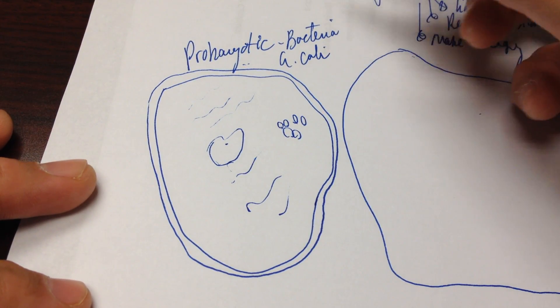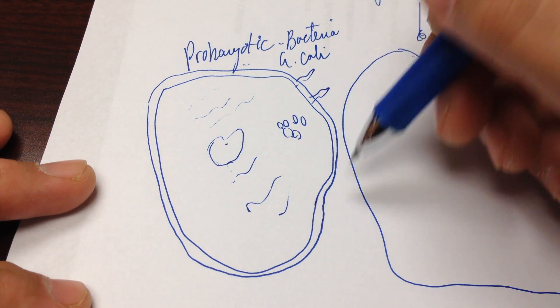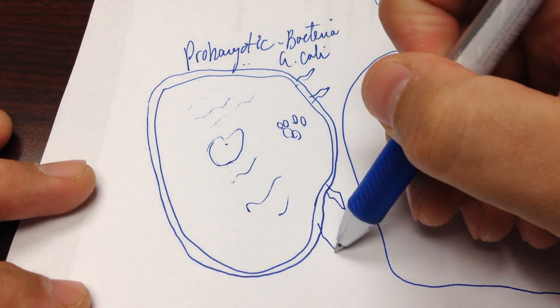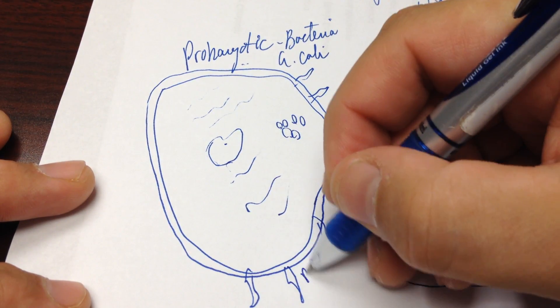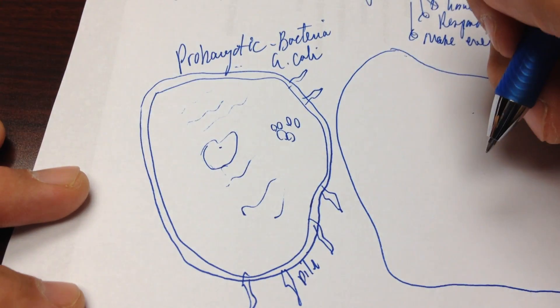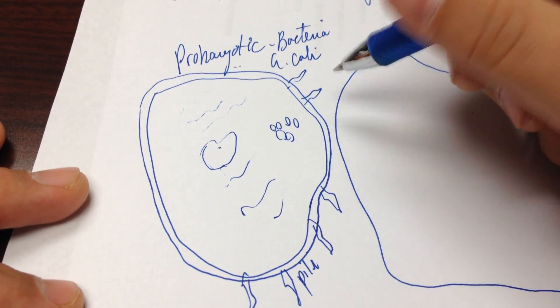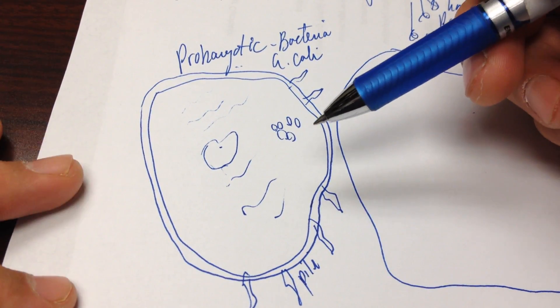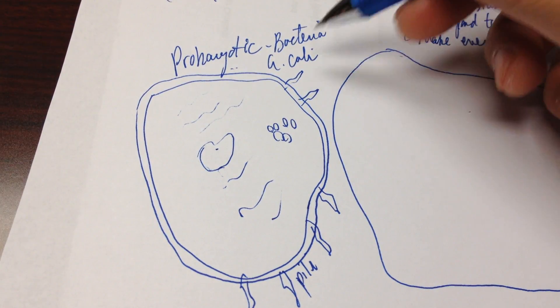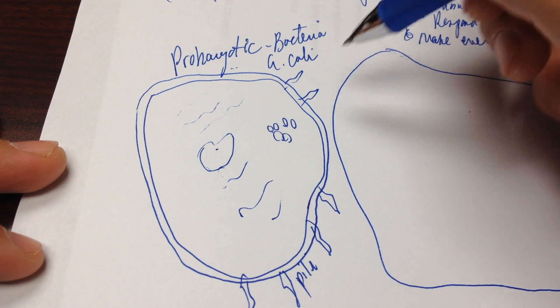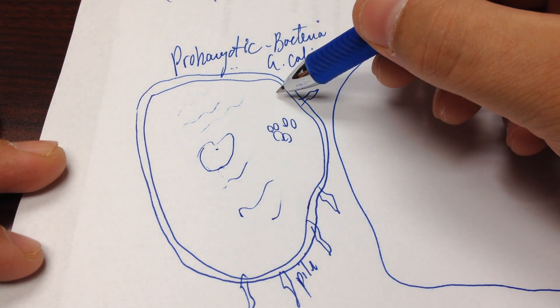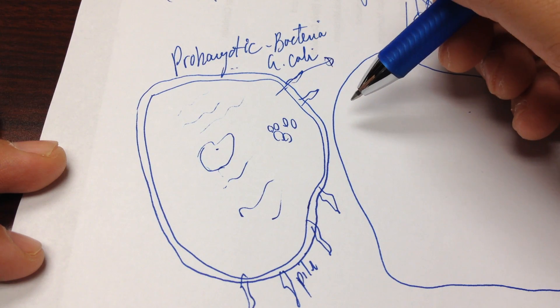Now, there's a lot of other optional structures. Some bacteria have these things called pili. These little projections that stick out from the outside. These are pili. And pili serve a number of purposes. They also, like the capsule, help them stick to things. But more than that, they're involved in bacterial conjugation, which is essentially just bacteria sex, where they essentially transfer information from one bacteria to the next.